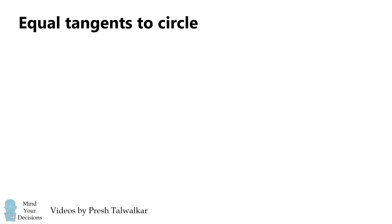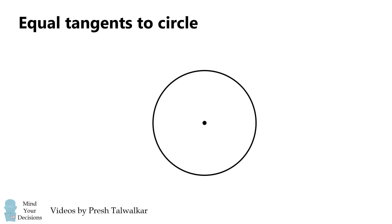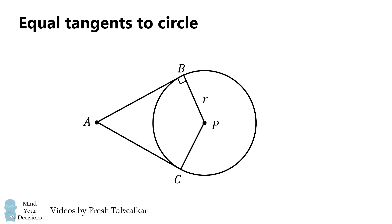We'll get started with equal tangents to a circle. Consider circle P and an exterior point A. Construct tangents AB and AC — we want to show that AB is equal to AC. To do that, we'll construct radii PB and PC, and then construct AP. It's clear that triangles ABP and ACP are congruent right triangles.